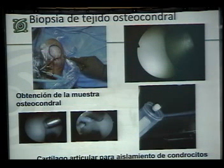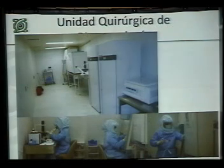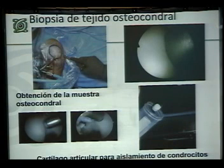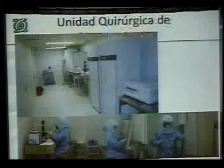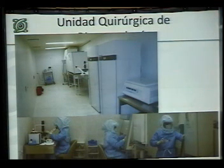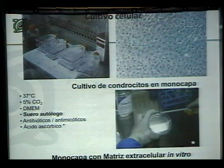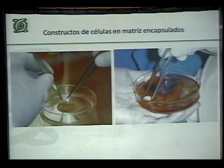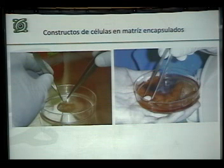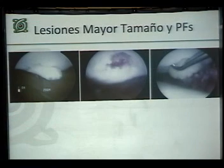Nuestra técnica se basa primero en tomar tres biopsias osteocondrales de 4 milímetros del surco intercondíleo, de la zona de menos carga. Esos cilindros osteocondrales se ponen en tubos con un medio de cultivo con antibióticos para transporte, se llevan al laboratorio donde podemos garantizar las condiciones de bioseguridad; hemos demostrado que no hay posibilidad de contaminación bacteriana o por micoplasma. Se cultivan las células para llevarlas a un número suficiente, y lo interesante es que después tenemos pequeños discos que podemos utilizar para rellenar un defecto, haciendo una mosaicoplastía biológica con células que podemos implantar artroscópicamente.